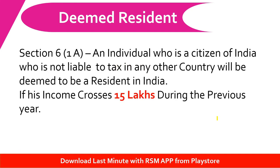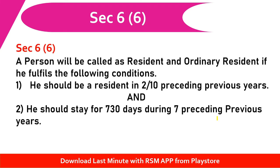So we have learned about Section 6, related to the rules of residency. There is also the concept of deemed resident. Now, we have learned how to determine if a person is resident or non-resident of India. If they are resident, then we need to further classify: number one is Resident and Ordinarily Resident, and number two is Resident but Not Ordinarily Resident.